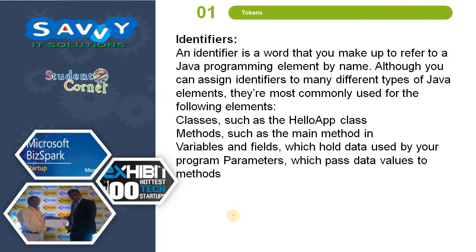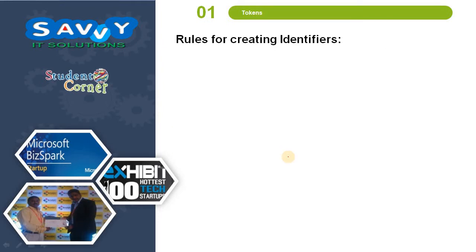The next topic is identifiers. An identifier is a word that you use to refer to a Java programming element by name. Although you can assign identifiers to many different types of Java elements, they are most commonly used for: classes, methods, variables, and program parameters.